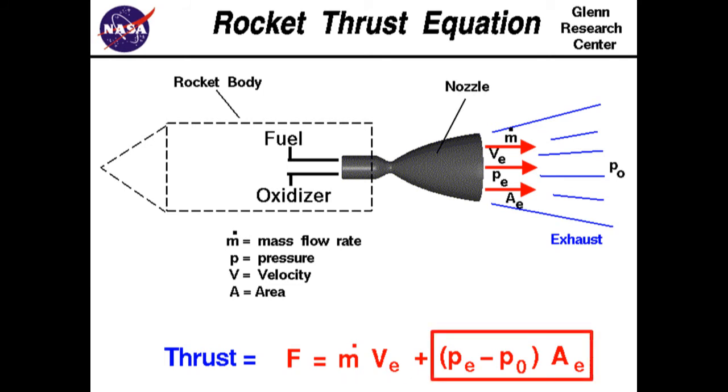And two, the pressure thrust, which is the product of the cross-sectional area of the nozzle and the difference between the exhaust pressure, PE, and the ambient pressure, P0. Ideally, the nozzle is designed for the optimum expansion ratio, AE over AT, which allows the propellant products to expand so they are at ambient pressure as they exit the nozzle.